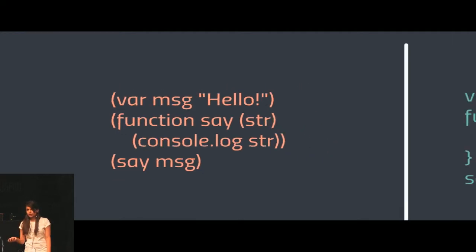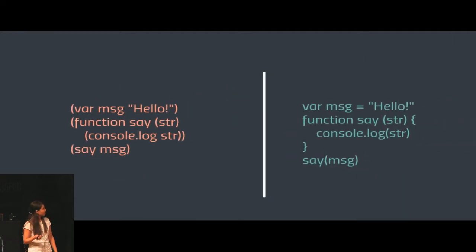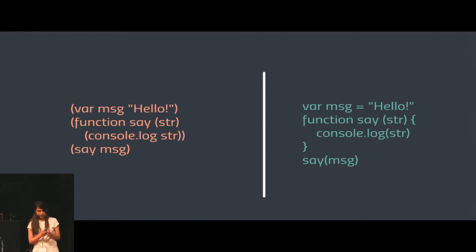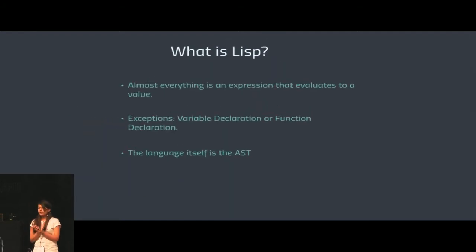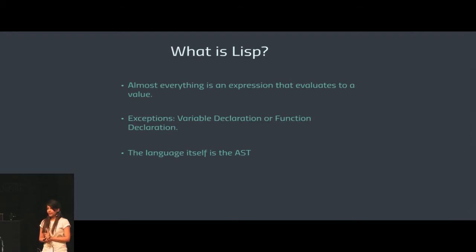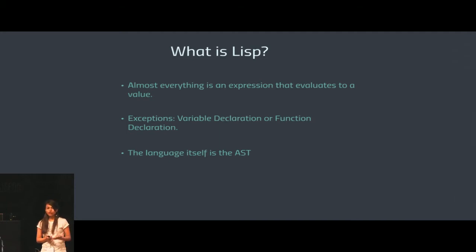Let's see how this translates to JavaScript. It's pretty straightforward — just declare variable, do the declaration, and that's how it looks in JavaScript. Lisp is a family of languages where almost everything is an expression that evaluates to a value. Exceptions are statements like variable declaration or function declaration, which have an effect in the program but do not evaluate to values.